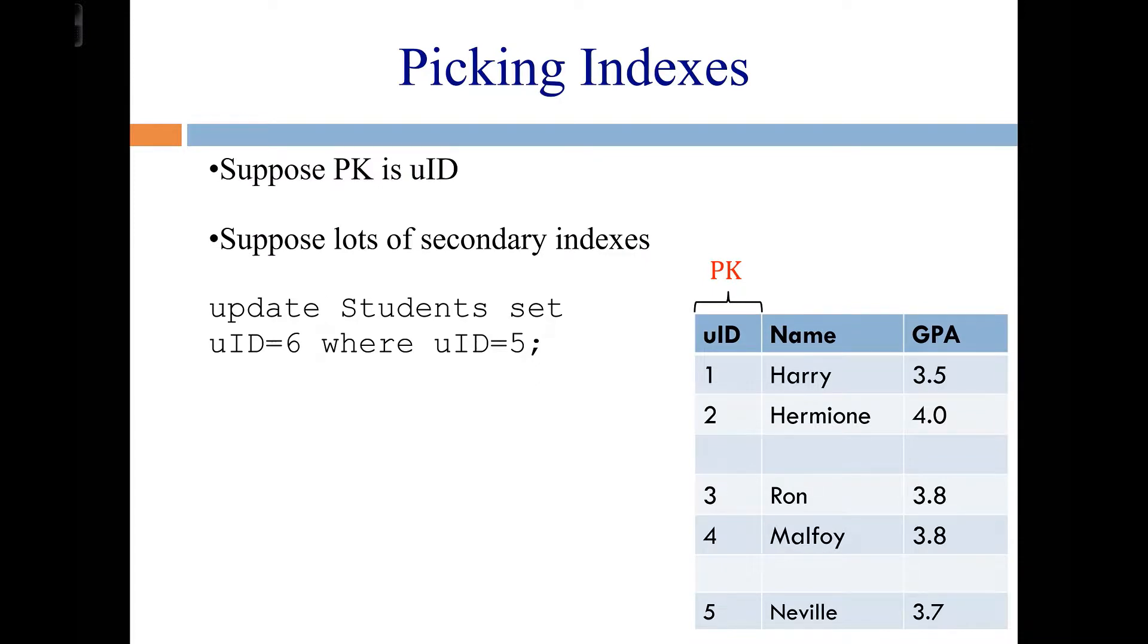Let's say we have lots of secondary indexes on this table, so maybe there are many more columns over here and lots and lots of secondary indexes. And then for some reason we want to run this command. All this command is doing is I want to change somebody's UID. So the person who has UID 5, I want to set it to 6. So this right here should become a 6. And first of all, if you want to do this, then you've already done something wrong because somebody's UID should never change, and that means you probably picked the wrong primary key.